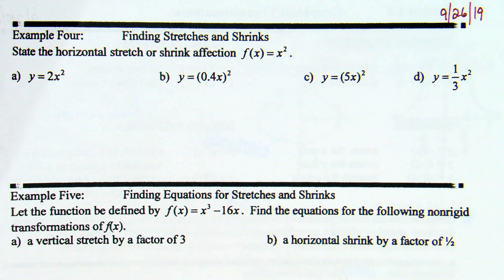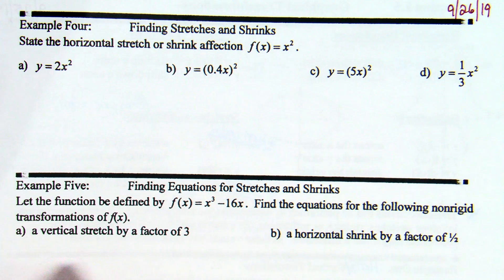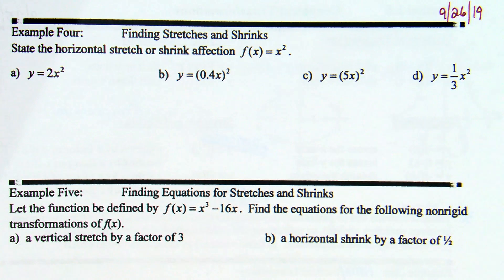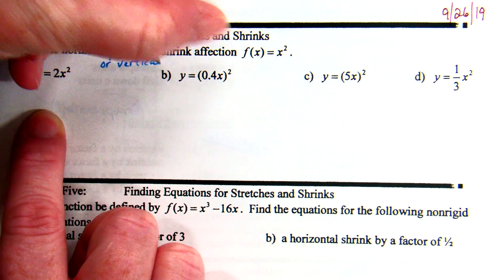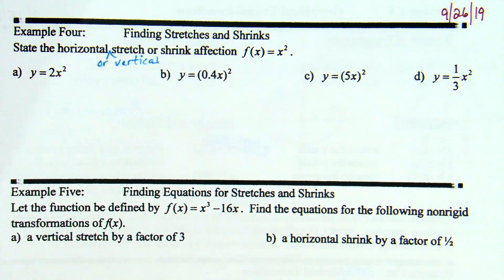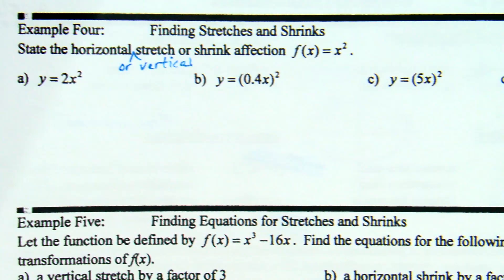Okay, so if you remember on the front side yesterday, there were two different sections under stretches and shrinks. One of them, that bottom one, was c times f(x). That's what you've done in algebra 2, that's your vertical stretch and shrink. The one above it is f(x/c), that's more the horizontal. As you look at a, y equals 2x squared, it says state the horizontal - I'm actually going to say that should really say state the horizontal or vertical stretch or shrink. So, as we look at a, what comes to mind?